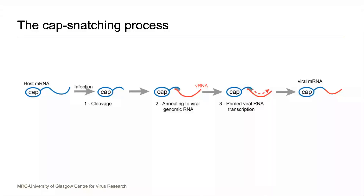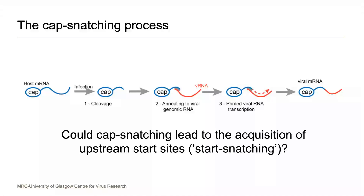The result is an mRNA which is a fusion of a sequence derived from a host mRNA, followed by the viral untranslated region, and finally the viral gene. This has two well-recognized effects: the first is that it allows viral mRNA to be recognized as mRNA by the cell, and the second is that it shuts off the ability of the host cell to translate most of its own proteins. But because a region is cleaved off host mRNAs which is large enough to plausibly contain start codons, this posed a question for us: could cap snatching — this well-recognized process — lead to the acquisition of upstream start sites? In other words, could cap snatching lead to start snatching?